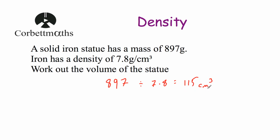Each one of those 115 cubic centimetres has a mass of 7.8 grams, meaning the total mass of the object would be 897 grams — which checks out. So what we did was divide the mass, 897, by 7.8, and that told us how many centimetre cubes there would be.